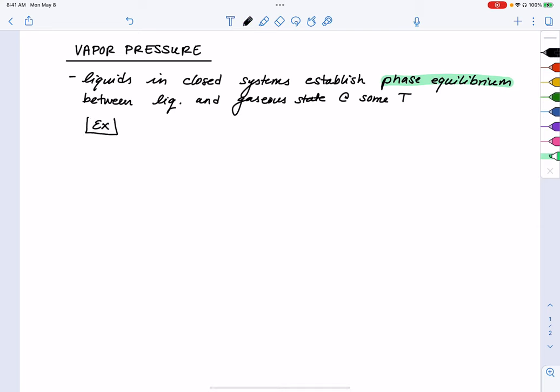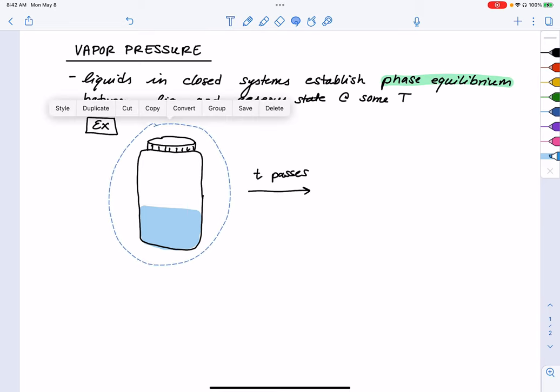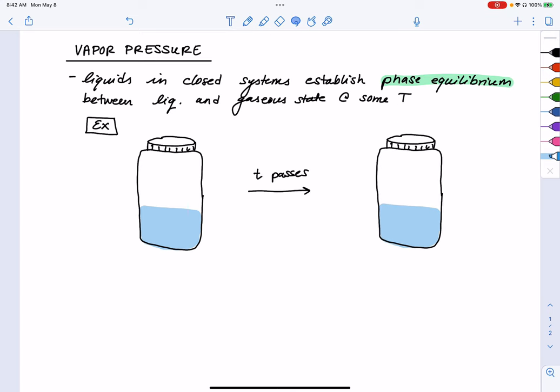And while this might seem like a lot of words, because it is, you've actually probably all seen this before in your everyday life. Like if you were to leave your water bottle in your car or outside for some amount of time, what you'll notice is that over time passing, there is a thermal equilibrium that is achieved between this liquid phase, your water bottle, and then the gaseous phase.